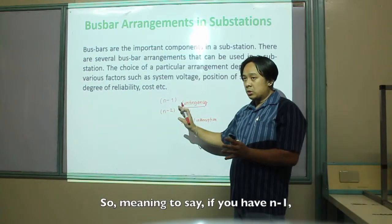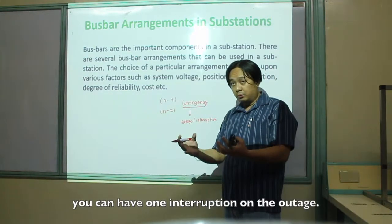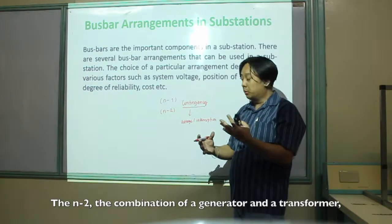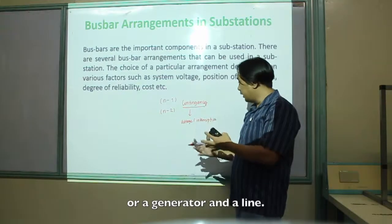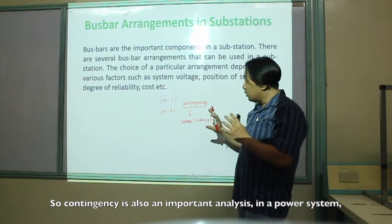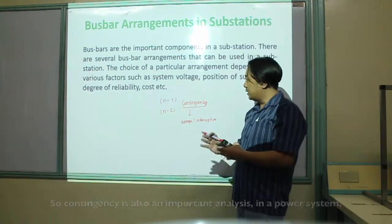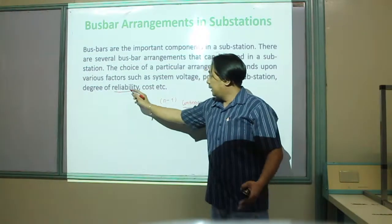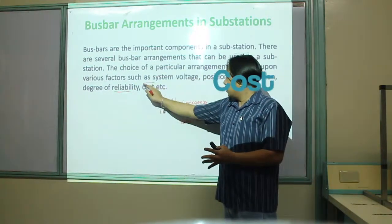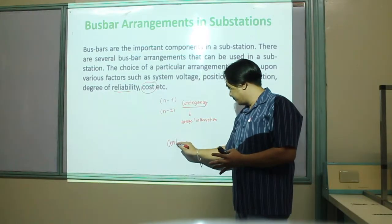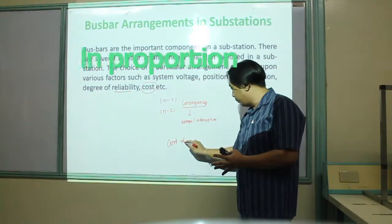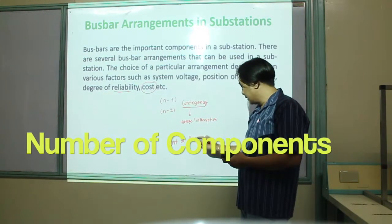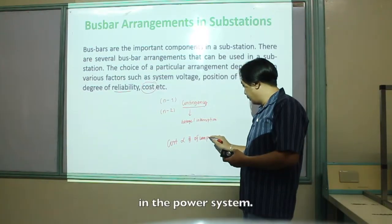If you have N-1, you can have one interruption or outage — in terms of one transmission line. N-2 involves a combination of a generator, transformer, or a line. Contingency is also an important analysis in power systems in order to know the degree of reliability. Last but not least is cost, which is always in proportion with the number of components in the power system.